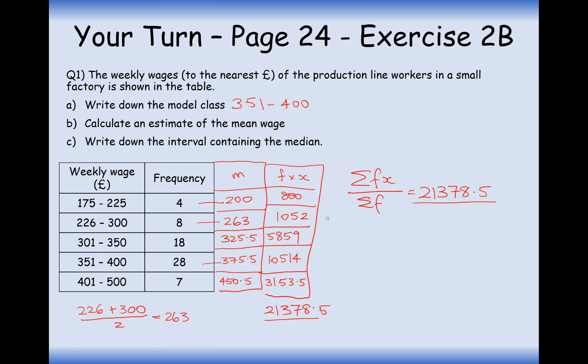And divide by the sum of all the frequencies, or in other words, how many pieces of data we have here, and that is 65. Okay, so doing the division here, and we get 328.9, and that will be pounds.